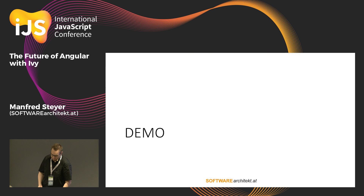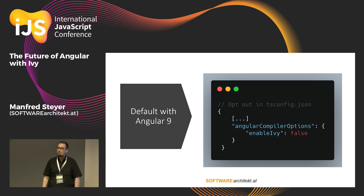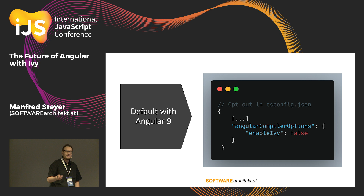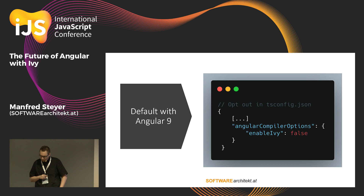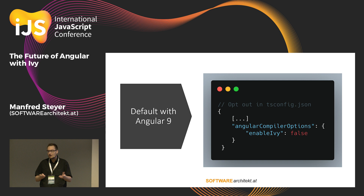So what do we need to get Ivy? The good message is, beginning with Angular 9, we get Ivy by default — we don't need to do anything. Angular 9 will soon be a release candidate, so it does not take a long time until it lands. If you run into edge cases where Ivy does not work with your project, you can easily opt out — just switch this flag in your tsconfig.json to false, and you will use the good old Vue engine. The Angular team wants to encourage you to try out Ivy, and if it does not work, please report your edge case to the team.